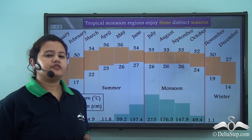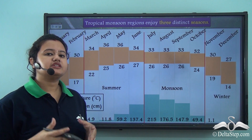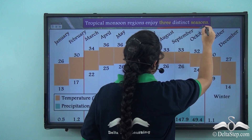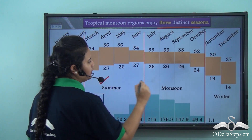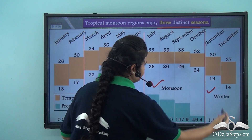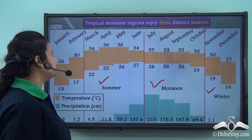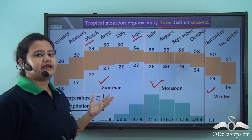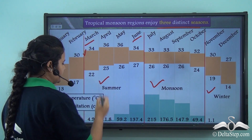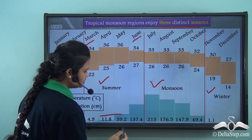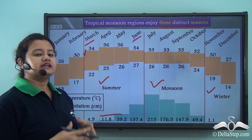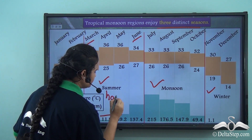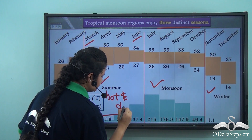Based on the temperature and precipitation patterns, tropical monsoon regions experience three distinct seasons: summer, monsoon, and winter. The summer season prevails from March to June. During this time, temperatures are very high and the rate of precipitation is low, so tropical monsoon regions experience a hot and dry summer. The excessive high temperature creates intense low pressure conditions over the land masses, which attracts the monsoon winds.